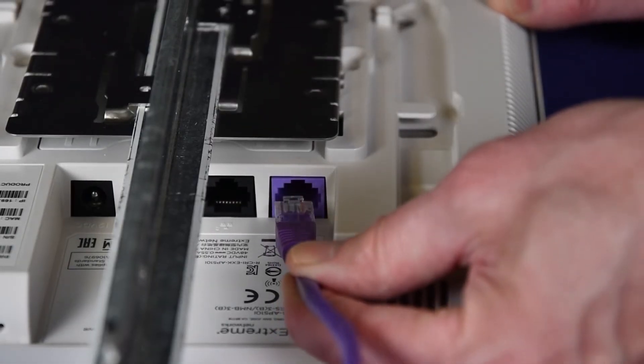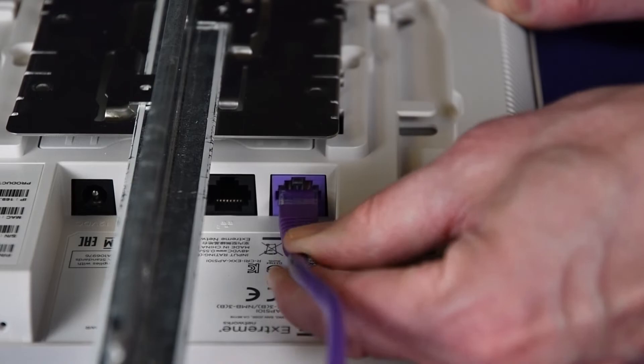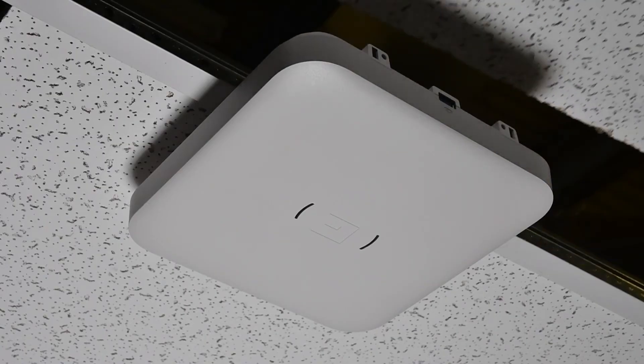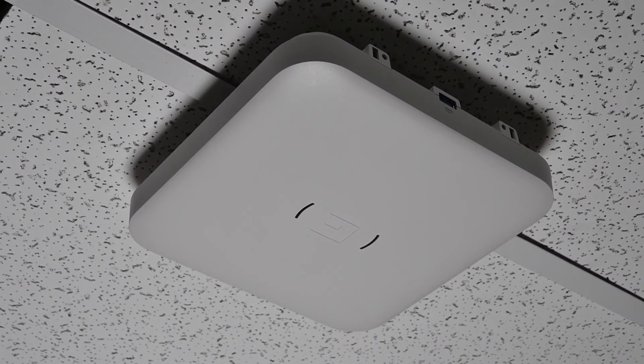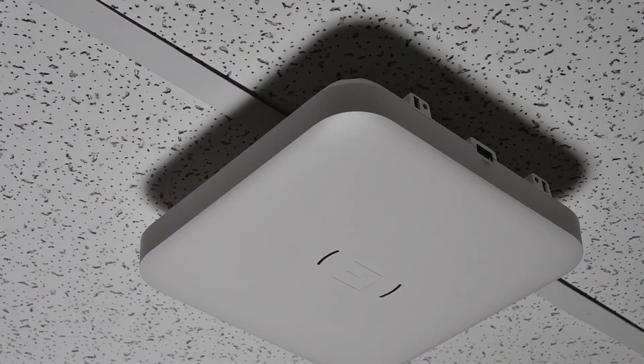Attach the Ethernet cable's RJ45 connector to the GE1 port and replace the tiles. You have now installed the access point using the 37201 bracket.